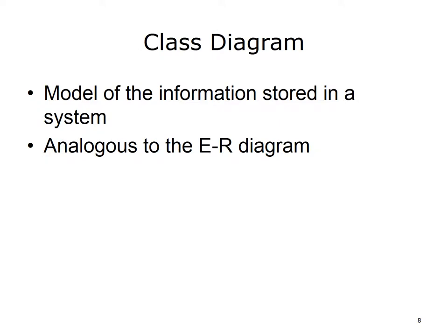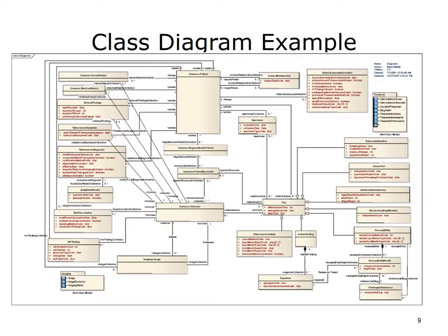A class diagram is a model of the information stored in a system and, in many ways, is analogous to the ER diagram covered in a previous lecture. A class diagram shows static information content. For example, data that are collected or used in patient care. Data collected and used in the diagnosis of tuberculosis are shown on the diagram in the slide. Class diagrams show the data in boxes and the relationships between the data, called associations. Like entity relationship diagrams, class diagrams also show cardinality and modality of the relationships.